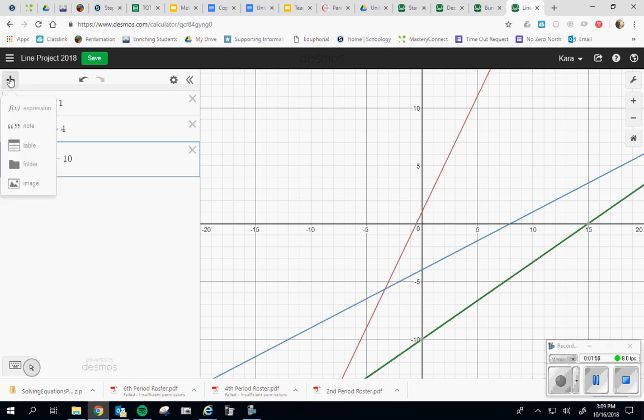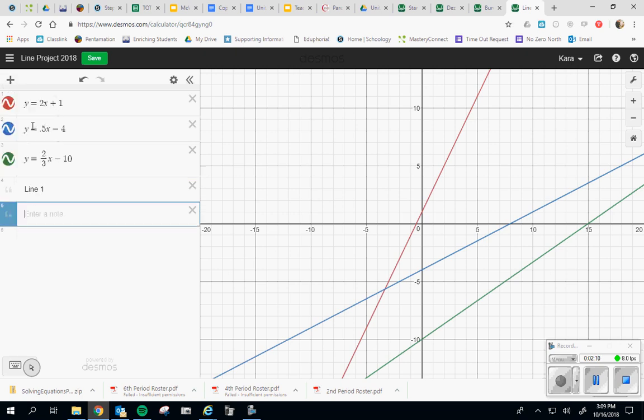The way you do that is also by pressing this plus sign, but instead of choosing expression, which is what we've been doing, you choose note. When you click note, it enables you to just type text. So this is where you're going to want to write things like line one, line two, line three, etc.